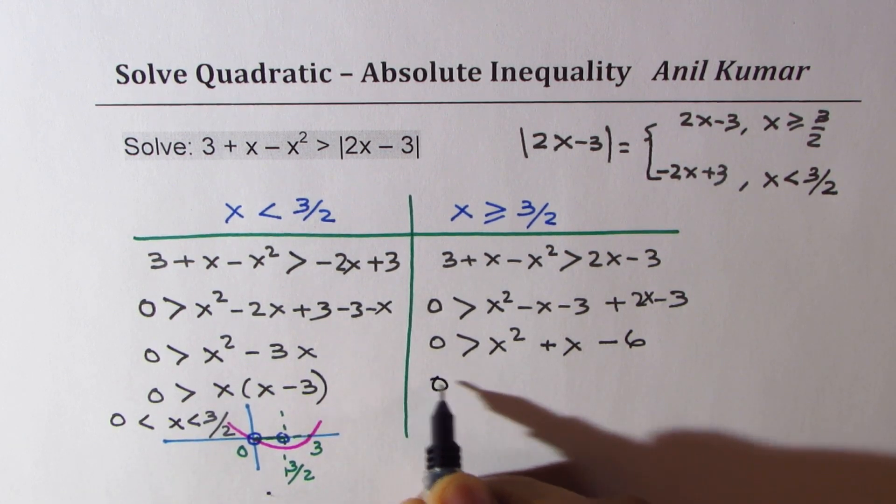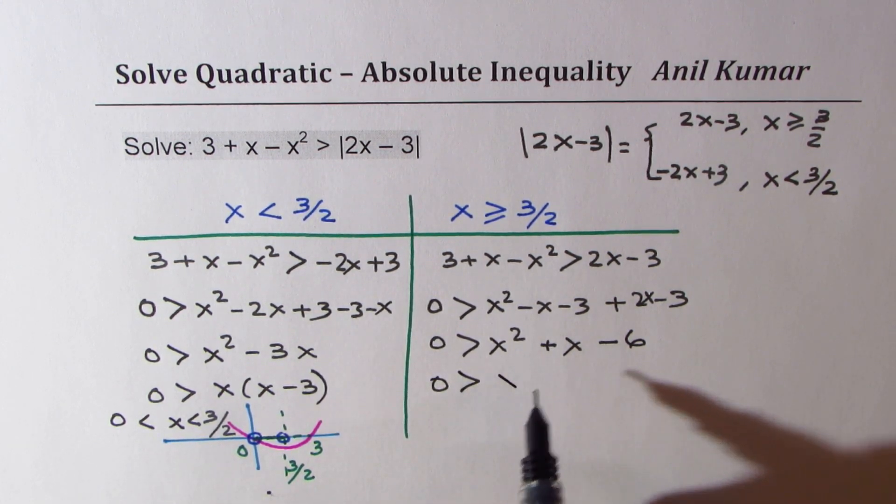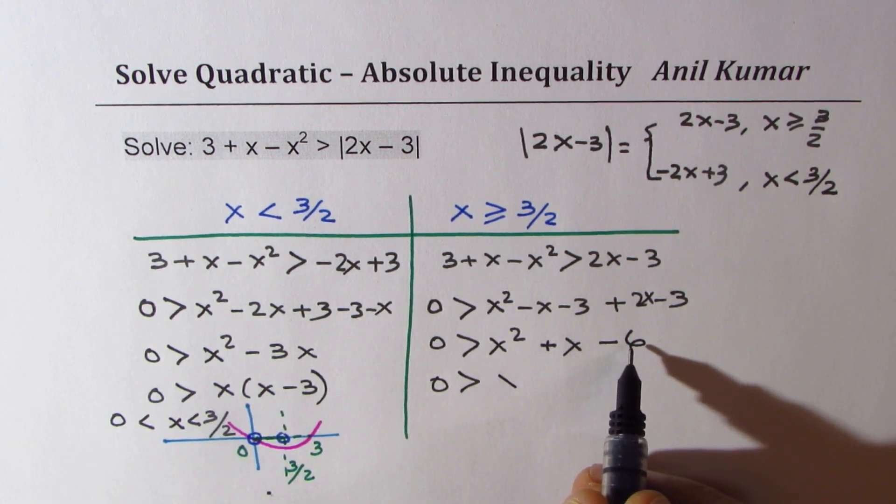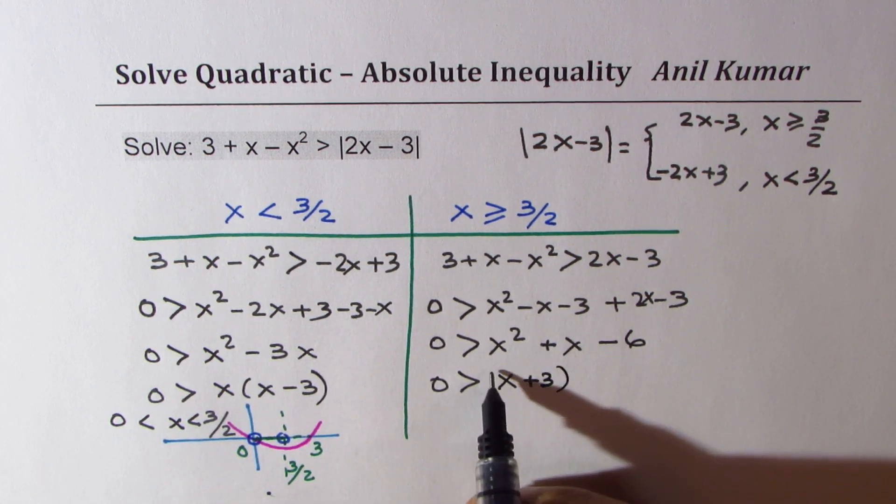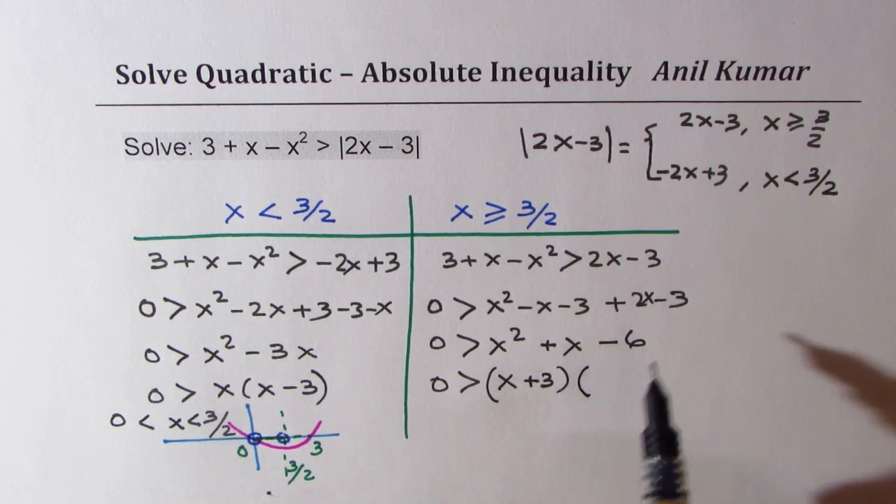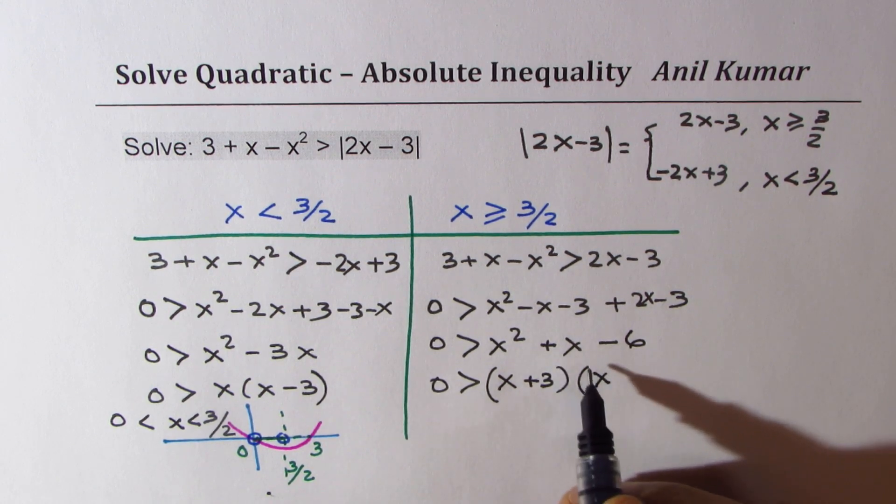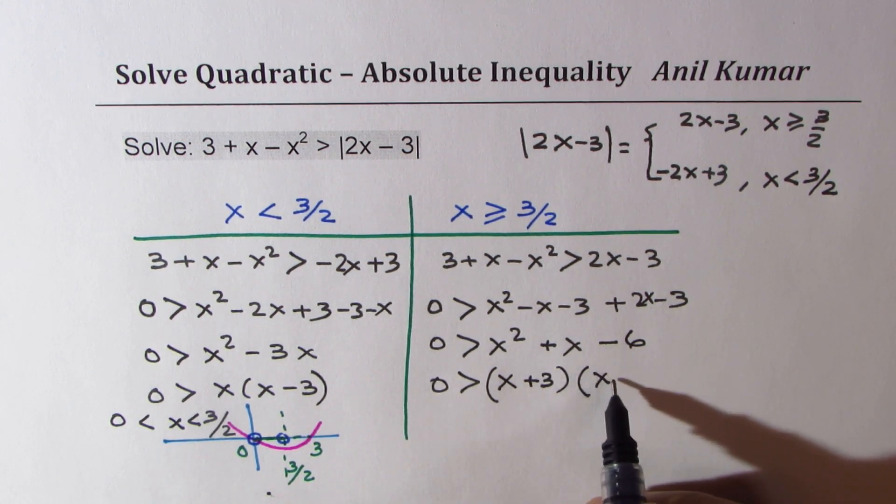Now this can be factored. So we could write this as 3 times 2, 3 positives. So we get x plus 3 times x minus 2.